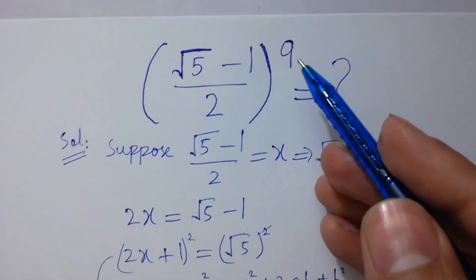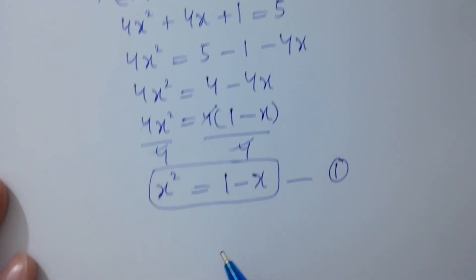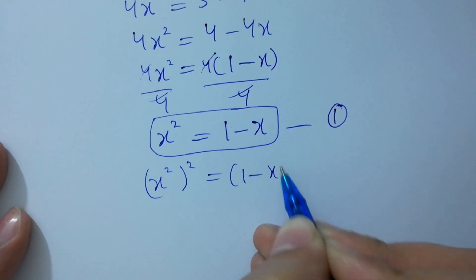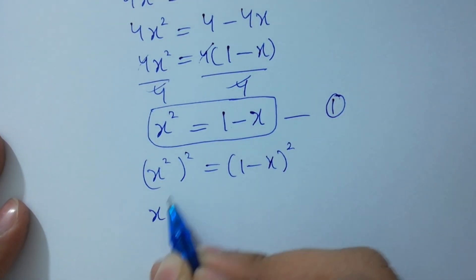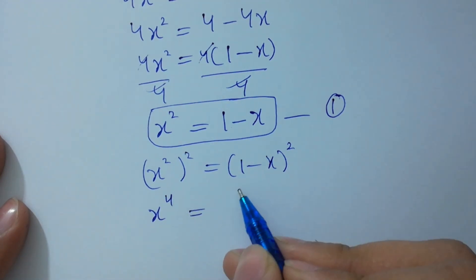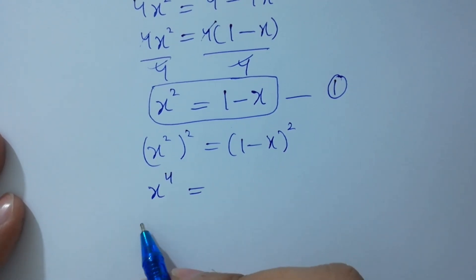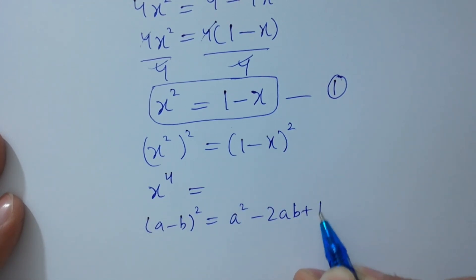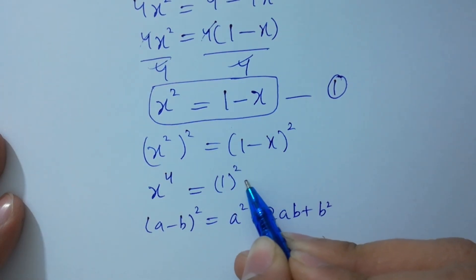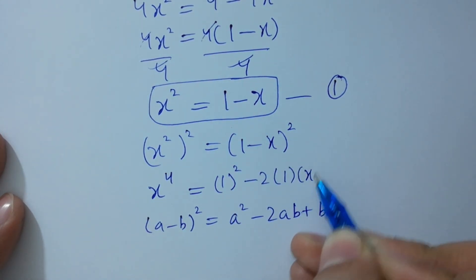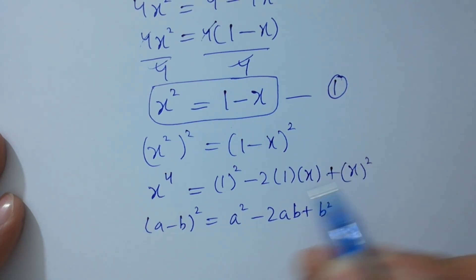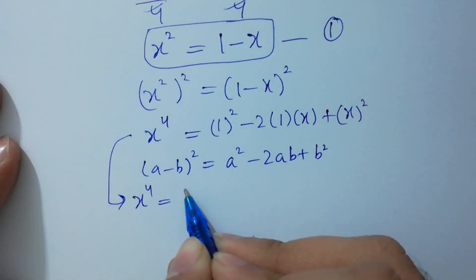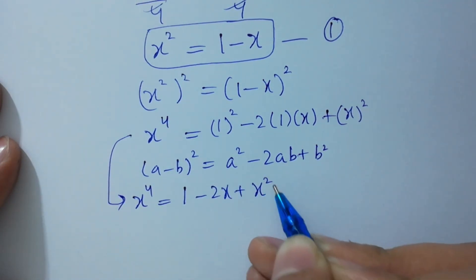To get the power of 9, I am going to take the square on both sides of x squared equals 1 minus x. We get x to the power 4 equals (1 minus x) squared. Applying the formula (a minus b) squared equals a squared minus 2ab plus b squared, we have: 1 squared minus 2 times 1 times x plus x squared, giving x to the power 4 equals 1 minus 2x plus x squared.